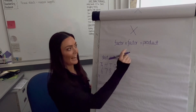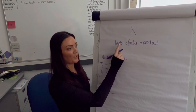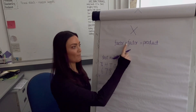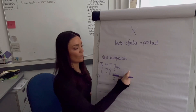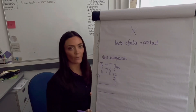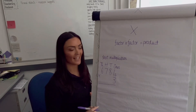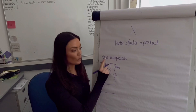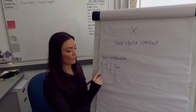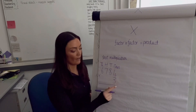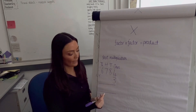We are looking at multiplying: our factor multiplied by our factor gives us our product, which is our answer in a multiplication number sentence. We are going to start by looking at short multiplication, where we're multiplying a number by a single digit, laid out in columns with all numbers in the correct columns.